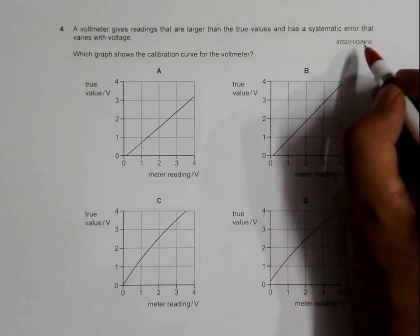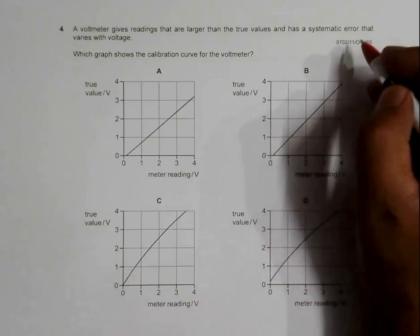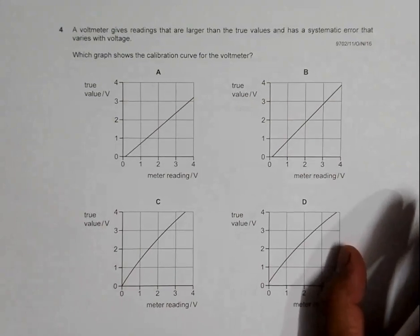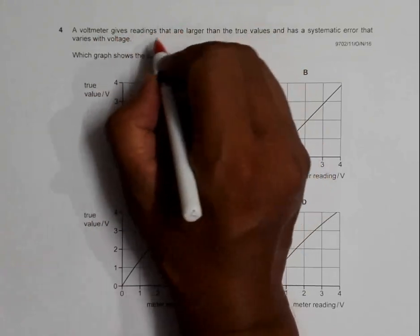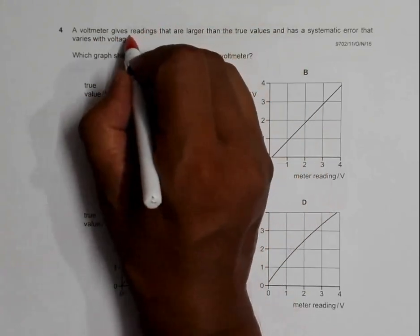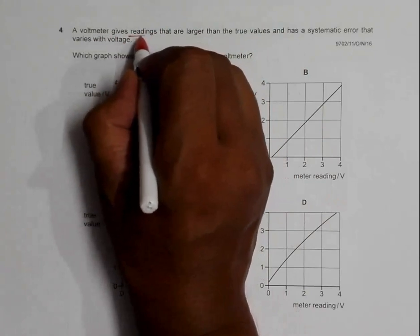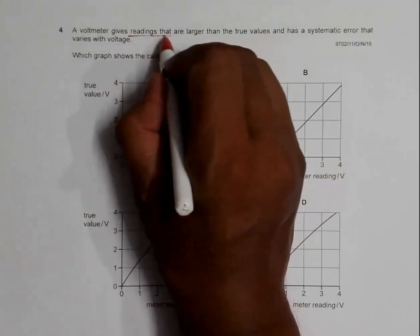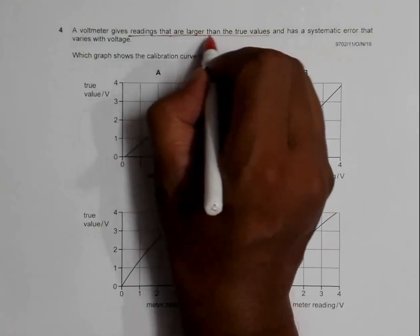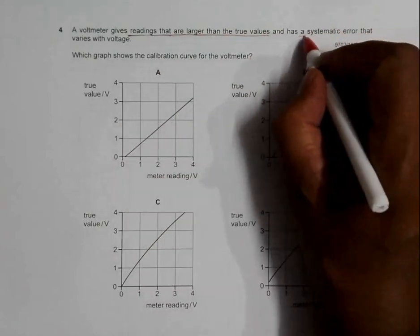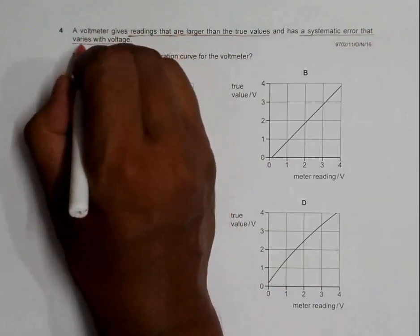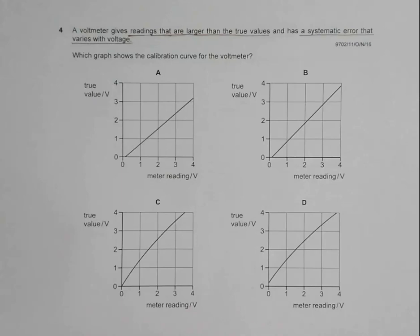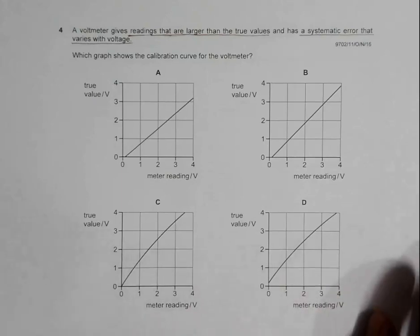This is the 2016 October/November Paper 11, question number 4, concerned with calibration. A voltmeter gives readings that are larger than the true values — the actual readings given by the voltmeter should be more than the true values — and has a systematic error that varies with voltage. We have four graphs and need to find which shows the correct calibration curve for the voltmeter.